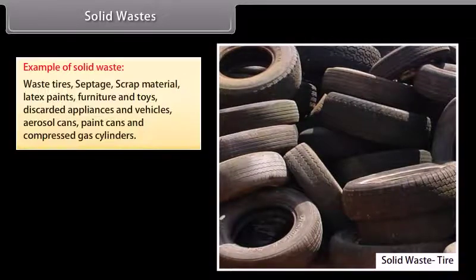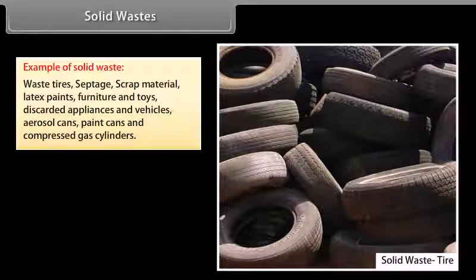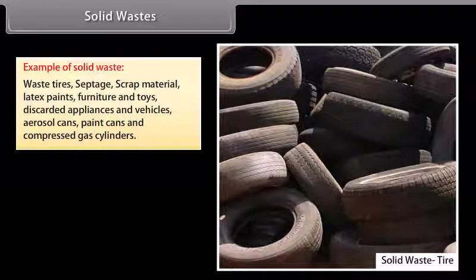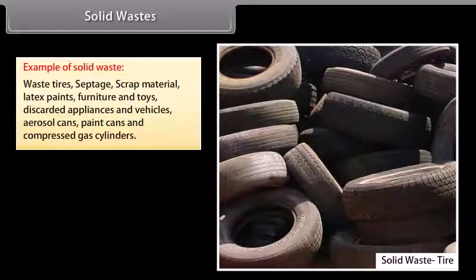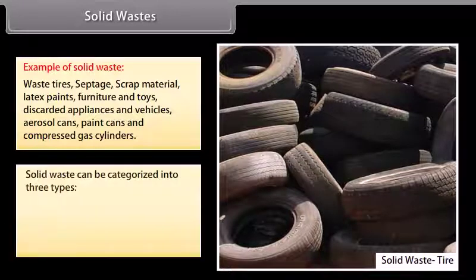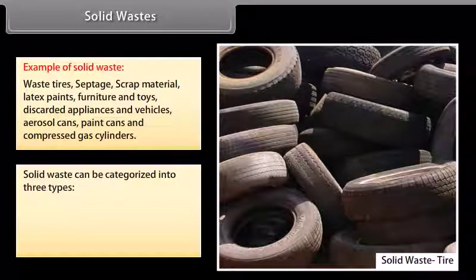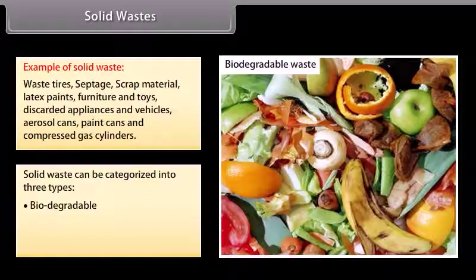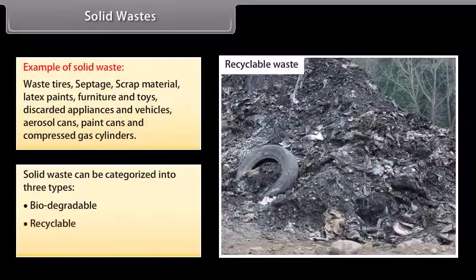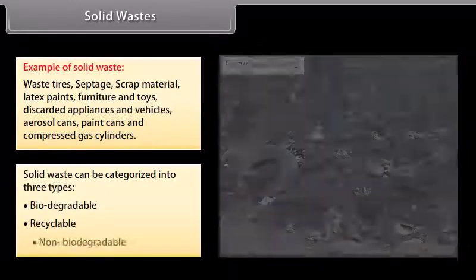Examples of solid waste include waste tires, septage, scrap material, latex paints, furniture and toys, discarded appliances and vehicles, aerosol cans, paint cans, and compressed gas cylinders. Solid waste can be categorized into three types: biodegradable, recyclable, and non-biodegradable.